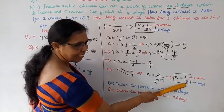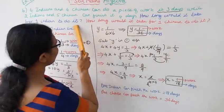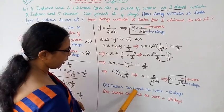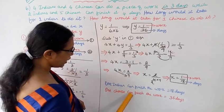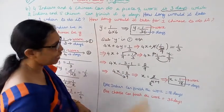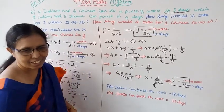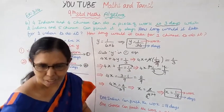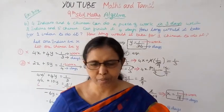How long would it take for one Indian to do the work? One Indian can finish the work in 18 days. How long for one Chinese? One Chinese can finish the work in 36 days. This method using work divided by days makes it easier. Subscribe to this channel and click the bell button. Thank you very much.